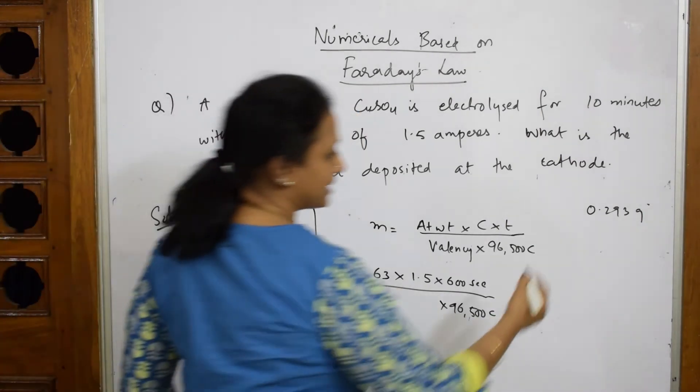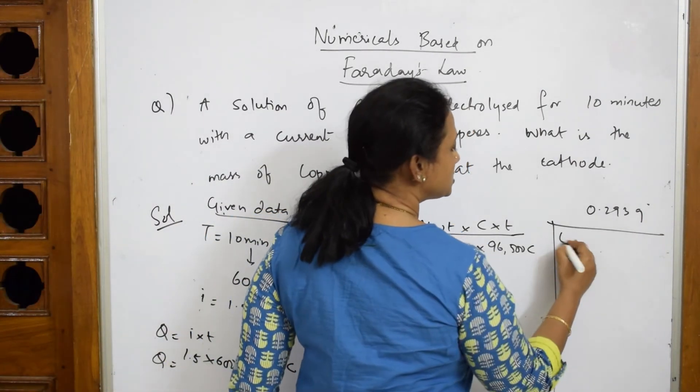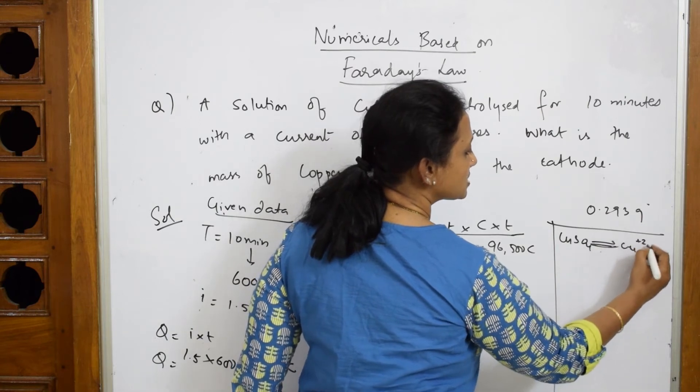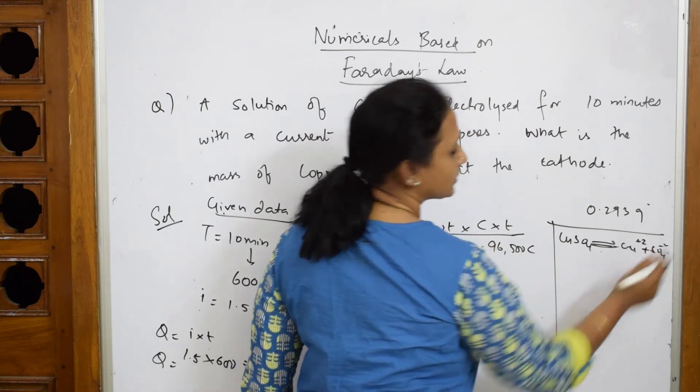Now, in copper sulfate, when it breaks up, you very well know, CuSO4 breaks up into Cu plus 2 plus SO4 minus 2. Done.